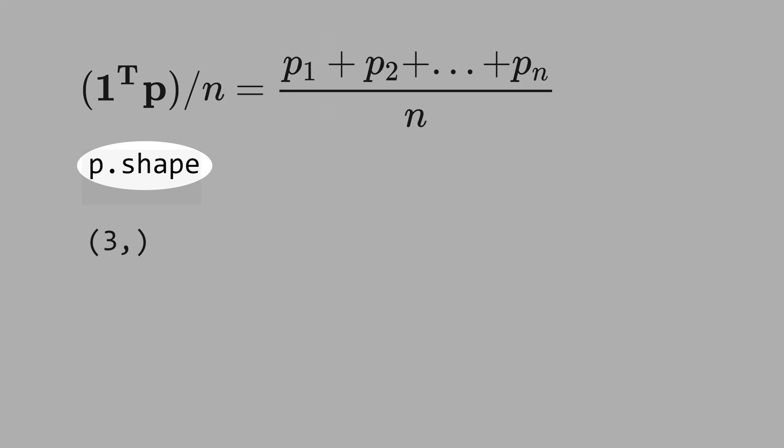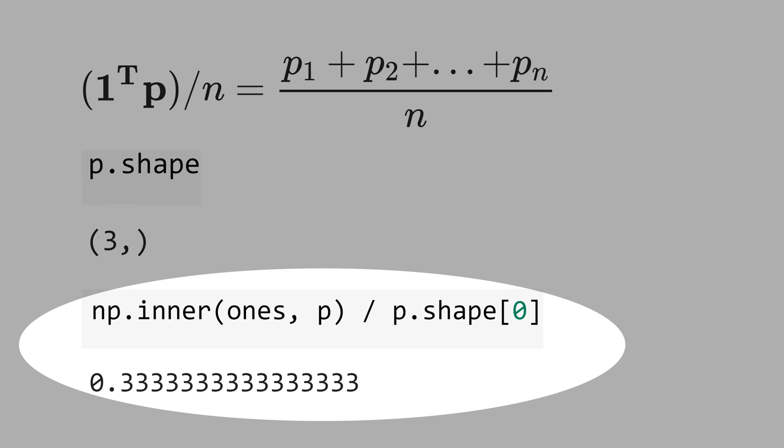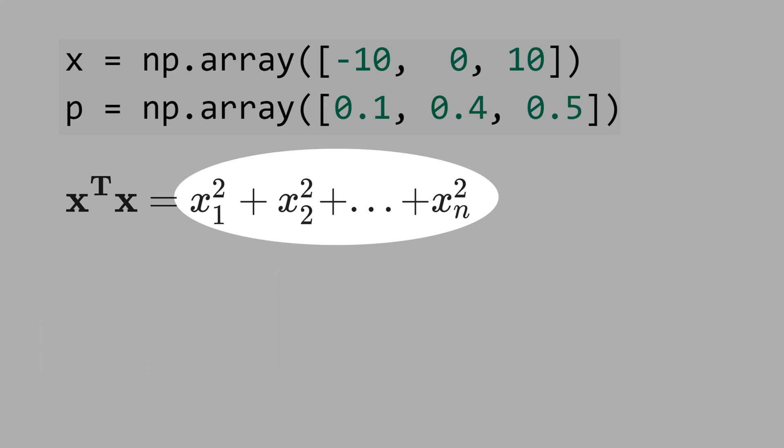Let's get the shape or dimension of p, that's 3. Then, we divide 1 by 3, and you get 0.33.